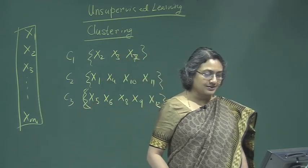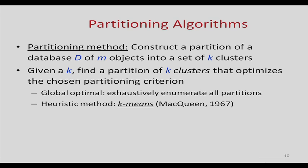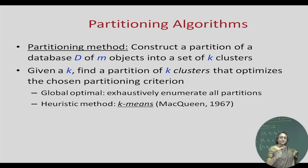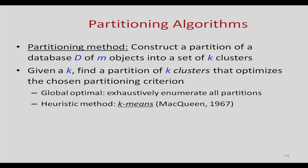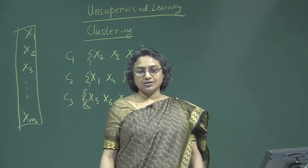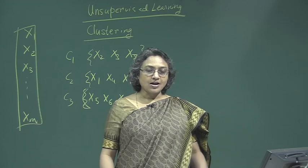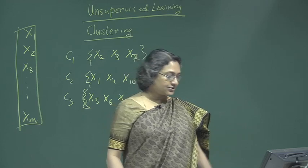Partitioning algorithms construct a partition of a given data sample into k clusters, where k is given to the algorithm. It will find k clusters that optimize the chosen criteria. The algorithm may come up with a global optimum or use a heuristic method and come up with a local optimum. We will explore in detail the K-means algorithm, which finds a local optimum based on certain criteria.